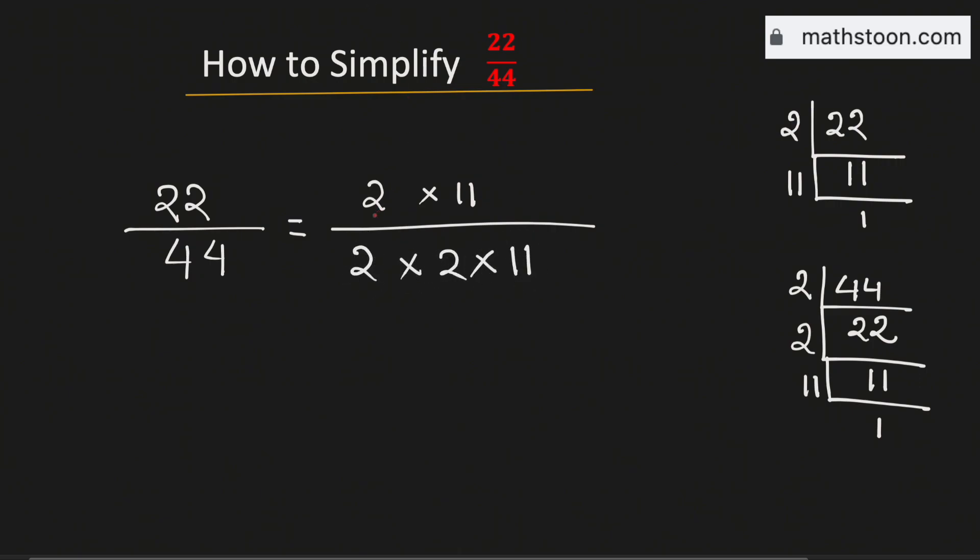Now we will cancel the common numbers, which are 2 and 11. Therefore we have 1 in the numerator and in the denominator we have 2. So 1 over 2 is the simplified reduced form of the fraction 22 divided by 44, and this is our final answer.